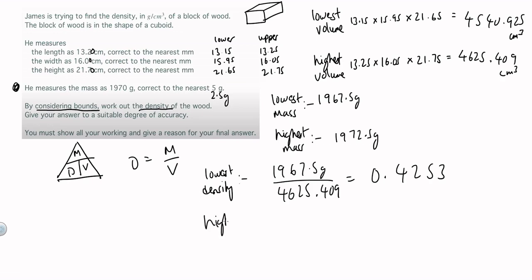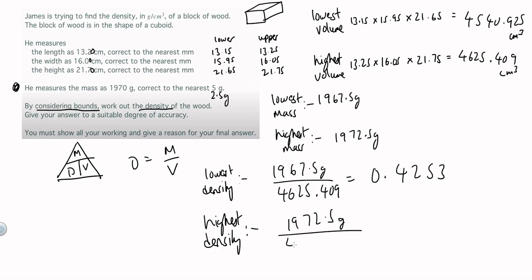For the highest possible density — the upper bound — I need to pick the biggest value for mass and the smallest value for volume, as explained at the start. The highest value for mass is here, and the lowest value for volume is this one. These are in centimetre cubed. I get 0.43 — 4, 3.